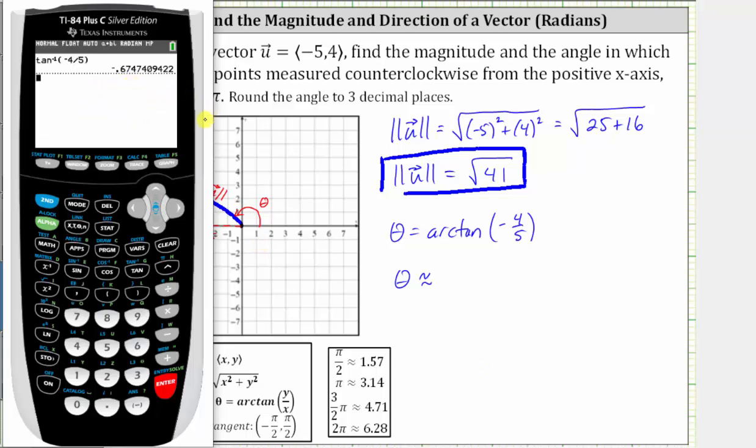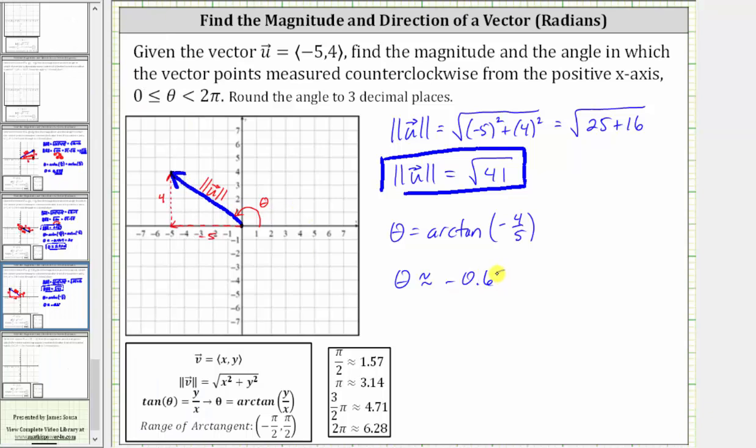This is not the angle we are looking for. This angle is in quadrant four. We're looking for the angle in quadrant two. Let's go ahead and write this down. The angle we found is this negative angle here in the fourth quadrant that has the same tangent function value as our angle theta. So because it has the same tangent function value, we know the reference angle of our angle in the second quadrant. This angle here must be 0.675 radians.